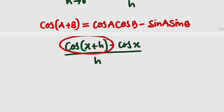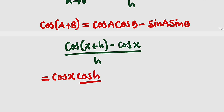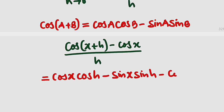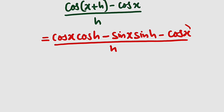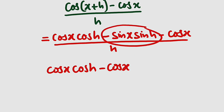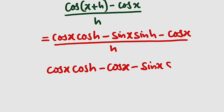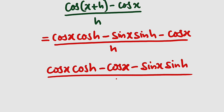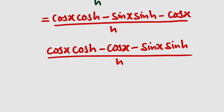So we are going to use this to expand cosine of x plus h. So this is equal to the limit as h approaches 0 of cosine x times cosine h minus sine x times sine h. And don't forget to subtract cosine x. The whole of this divided by h.